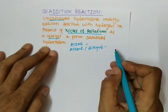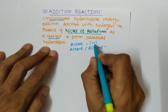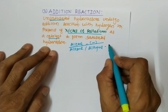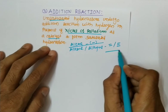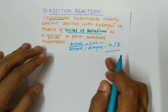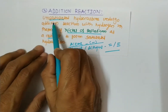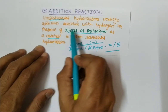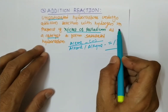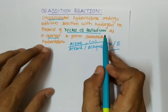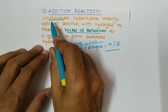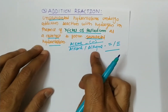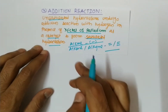Simply put, if a single covalent bond is present, that is called a saturated hydrocarbon. If a double bond or triple bond is present, that is called an unsaturated hydrocarbon. In the addition reaction, unsaturated hydrocarbons — alkenes or alkynes — react with hydrogen in the presence of nickel or palladium as a catalyst. The unsaturated compound converts to a saturated compound, meaning alkene or alkyne converts to alkane.